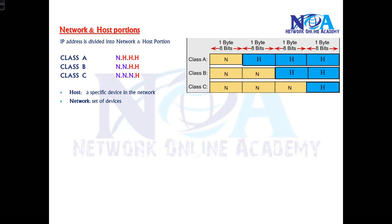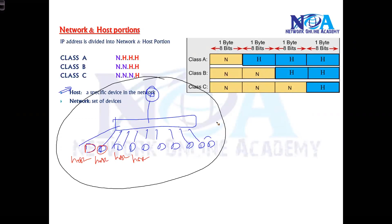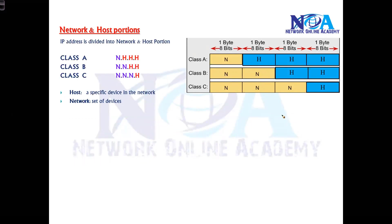Now the question is: what exactly are the network and host portions? The host represents one single device in the network. For example, in a network with some computers connected through a switch and a router, each individual device is identified as a host. Whereas a network represents the set of devices — this group of devices is called a network. So individual devices are referred to as hosts, and the network is the name given to the entire group.